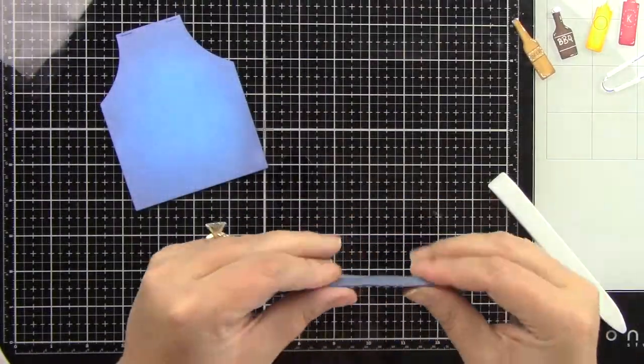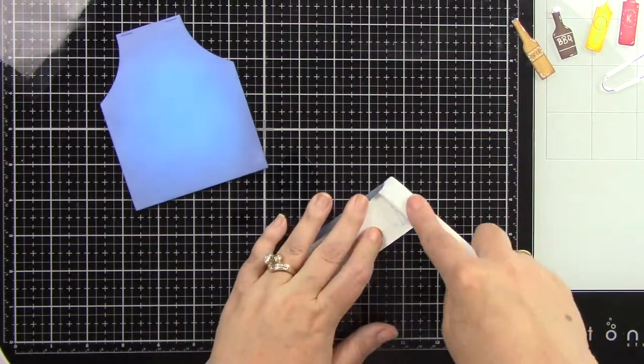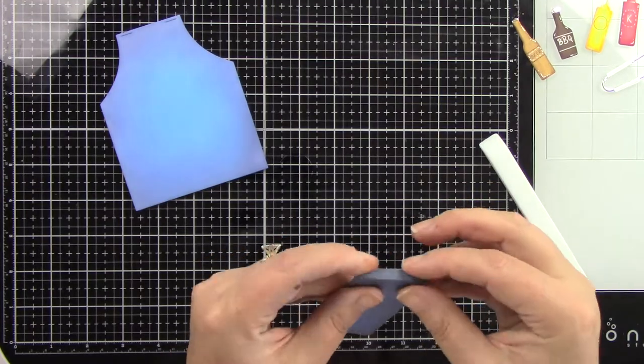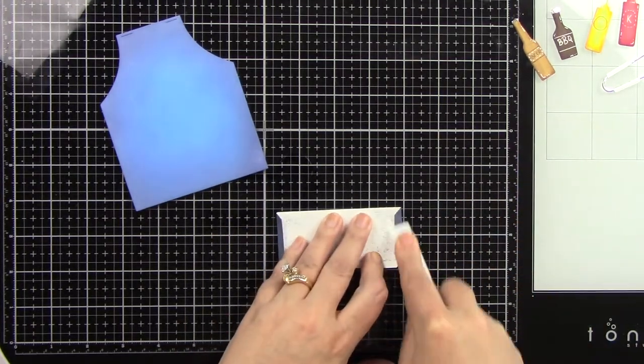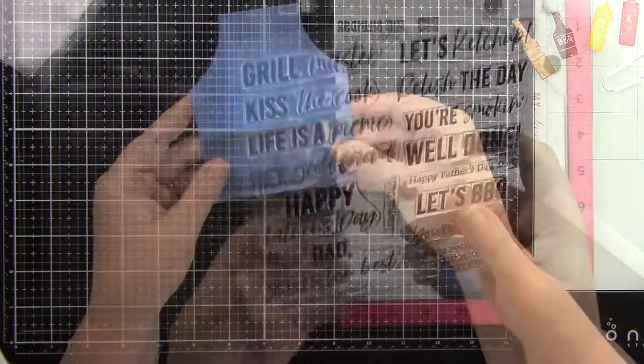Now here is the pocket and I'm going to fold it on the score lines. You have one on the bottom and then one on each side. I'm using a bone folder to get a nice sharp crease. That's going to go on the bottom part of the apron and hold all the fun tools.